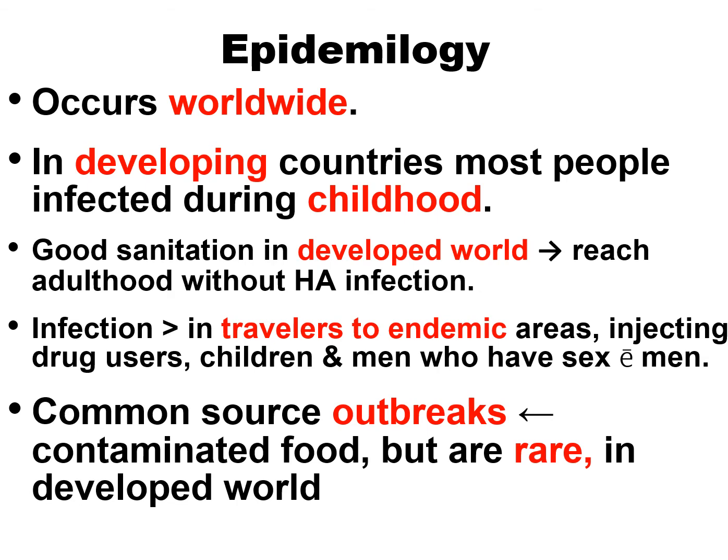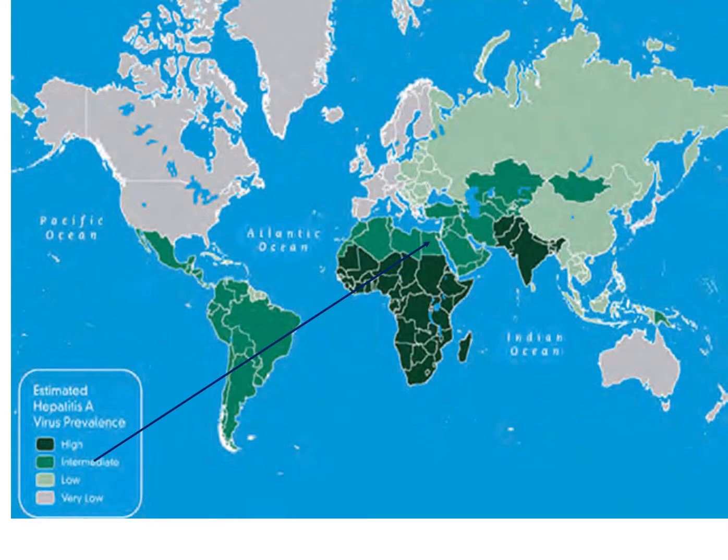Common source outbreaks are due to contaminated food, but they are rare in the developed world because of hygienic methods to prepare food. The map shows the distribution of Hepatitis A all over the world — Egypt has an intermediate prevalence.